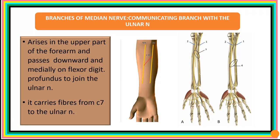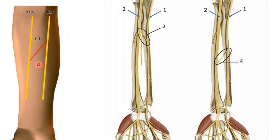The next branch is the communicating branch of the median nerve with the ulnar nerve. This nerve arises in the upper part of the forearm and passes downwards, running medially on the flexor digitorum profundus, where it joins the ulnar nerve. It is this communication that passes the C7 fibers to the ulnar nerve. Here is the communicating branch — sometimes seen arising at various levels in the forearm.